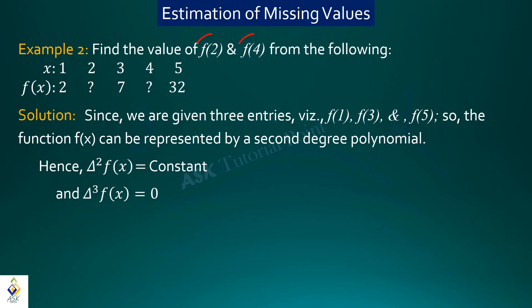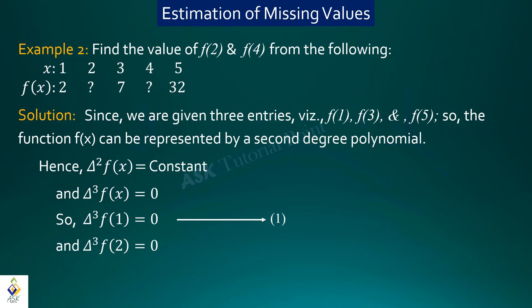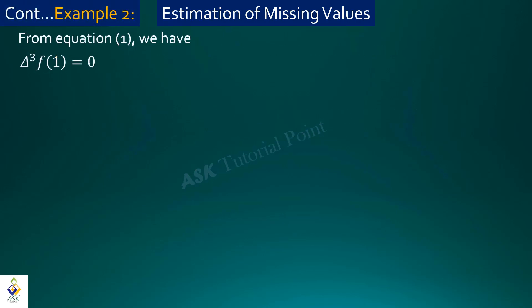As we have two unknowns, f(2) and f(4), we need two equations. We write delta³ f(1) = 0 and delta³ f(2) = 0 for the first and second argument values respectively. Expanding (E−1)³ f(1) = 0 using the binomial theorem, with h = 1, and substituting the known values.